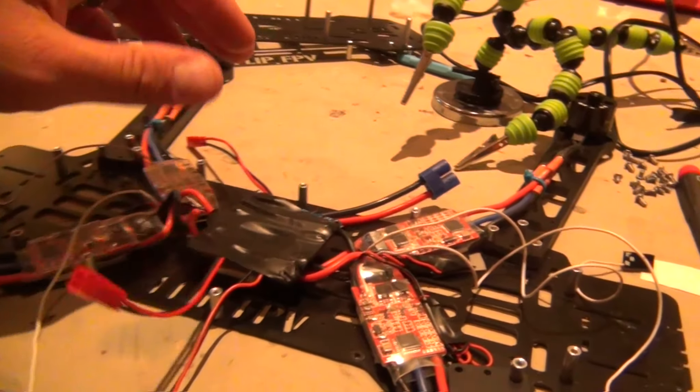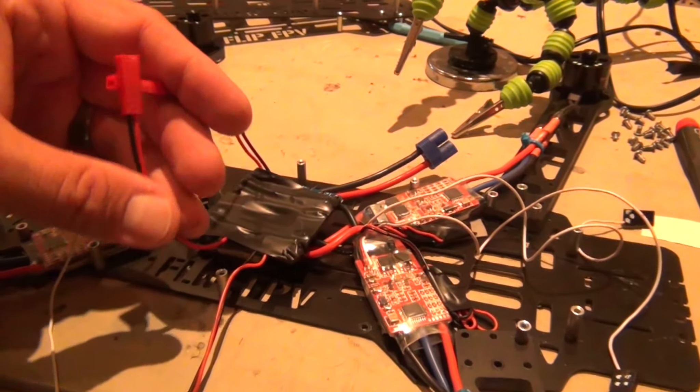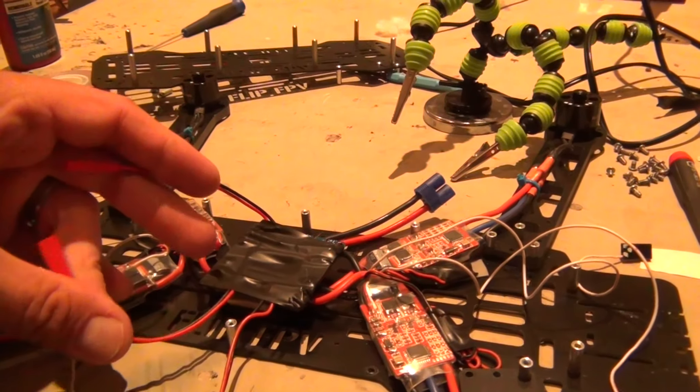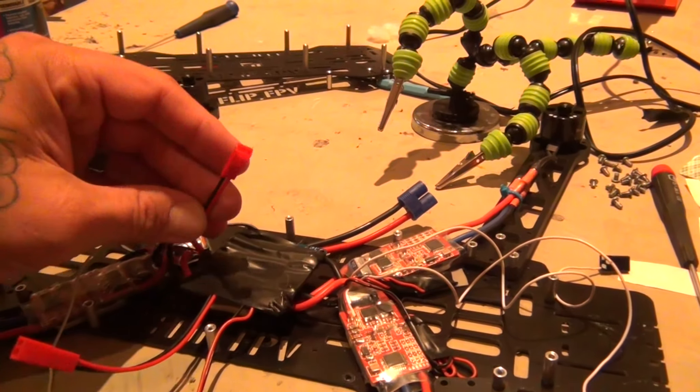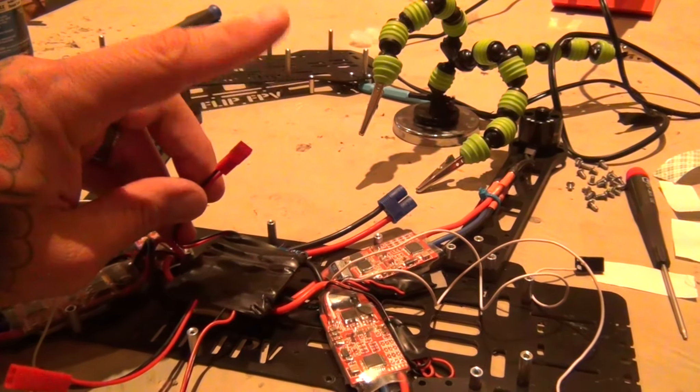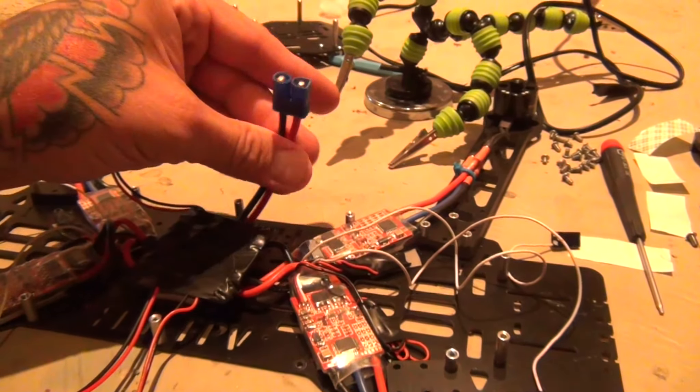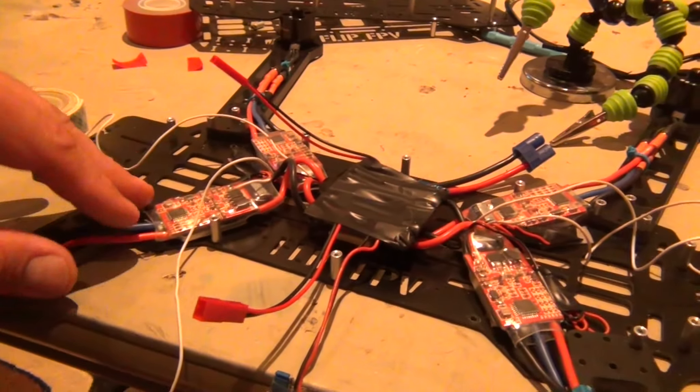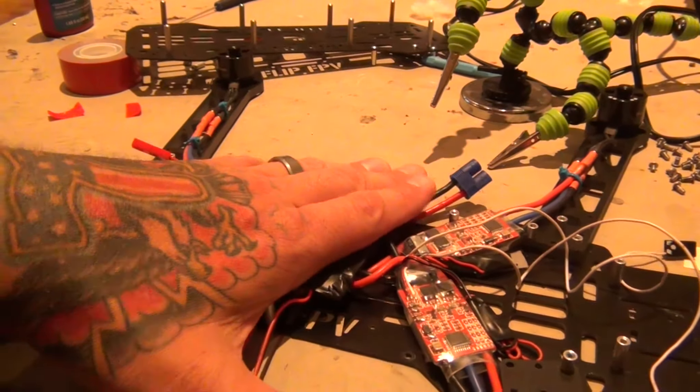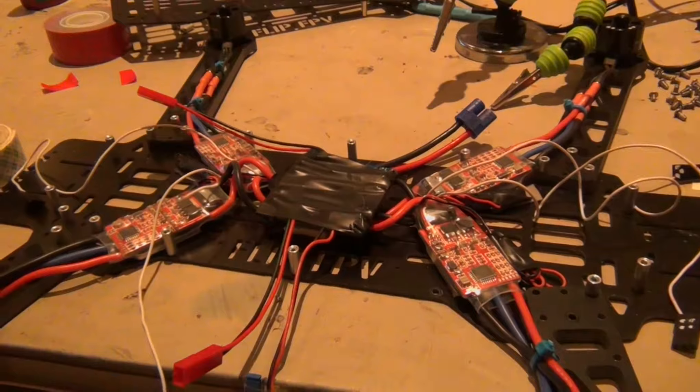I tapped in two JSTs: one in case I want to run some LED lights, and one to feed my camera gear. I put an EC3 on here for my main pack. We're getting ready to put the frame back together and I'll be right back.